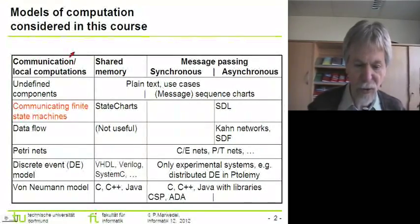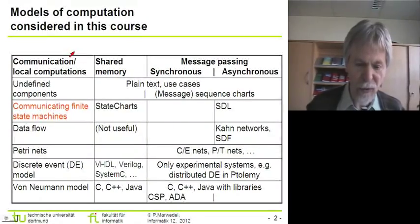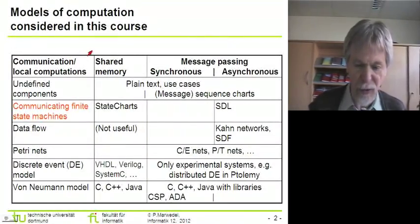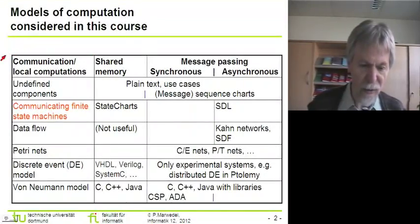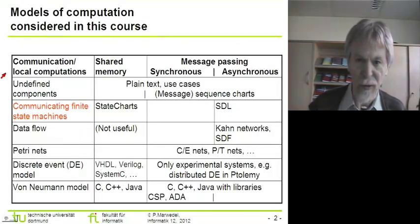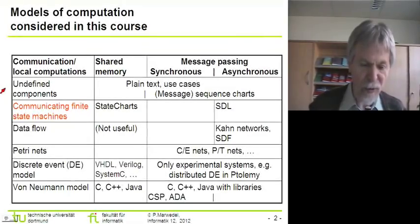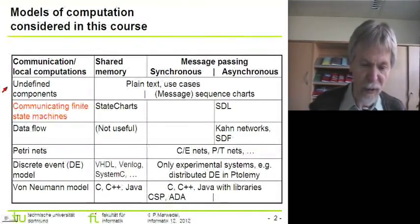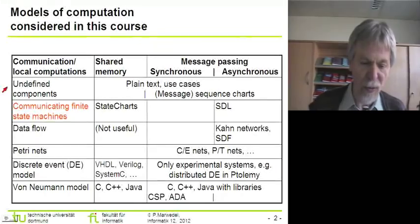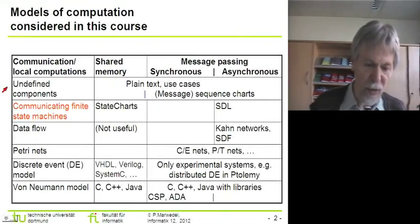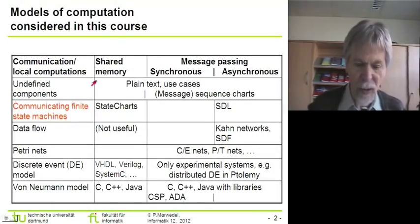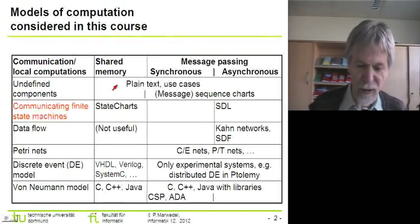In the horizontal dimension, we have the models that we're using for communication. And in the vertical dimension, we have the models that we're using for the computations within the components. During the last lecture, I looked at the very first row, which deals with techniques used for the early specification phases, where we don't want to care about the details of the model of computation within the components. We looked at plain text, use cases, and sequence charts.